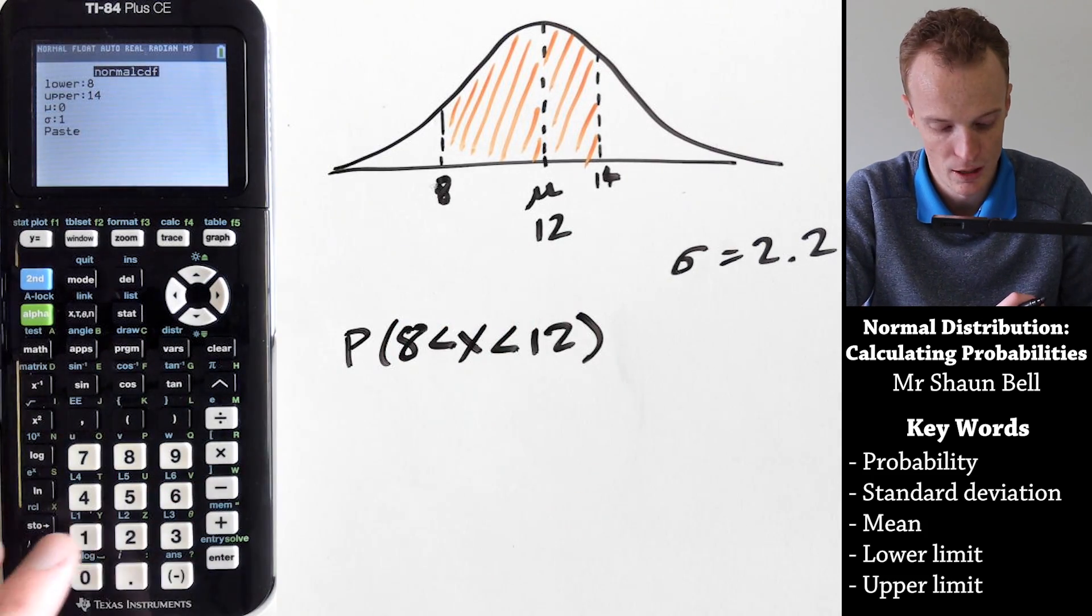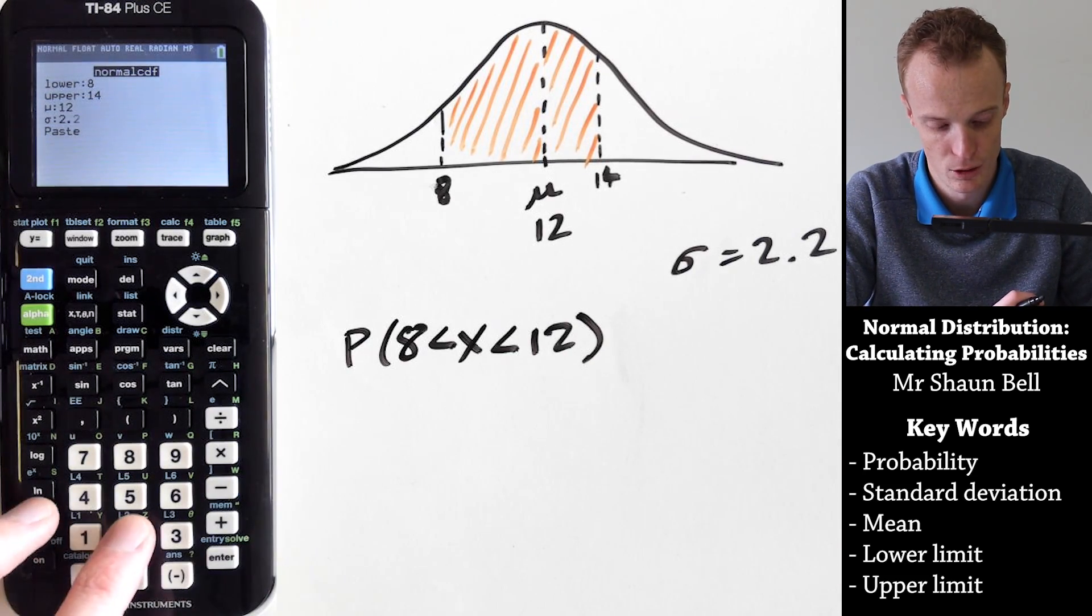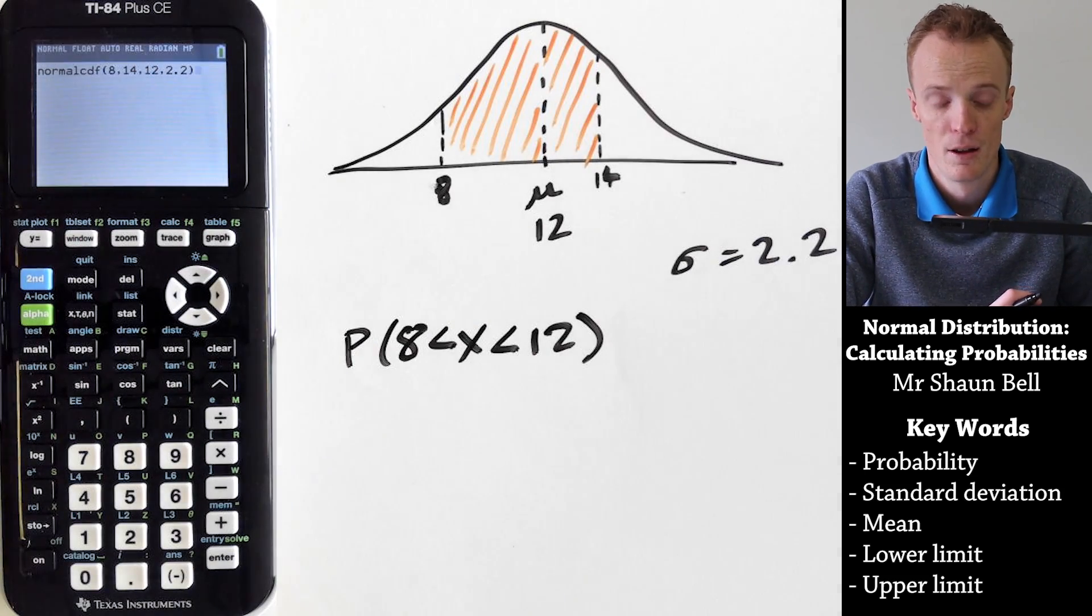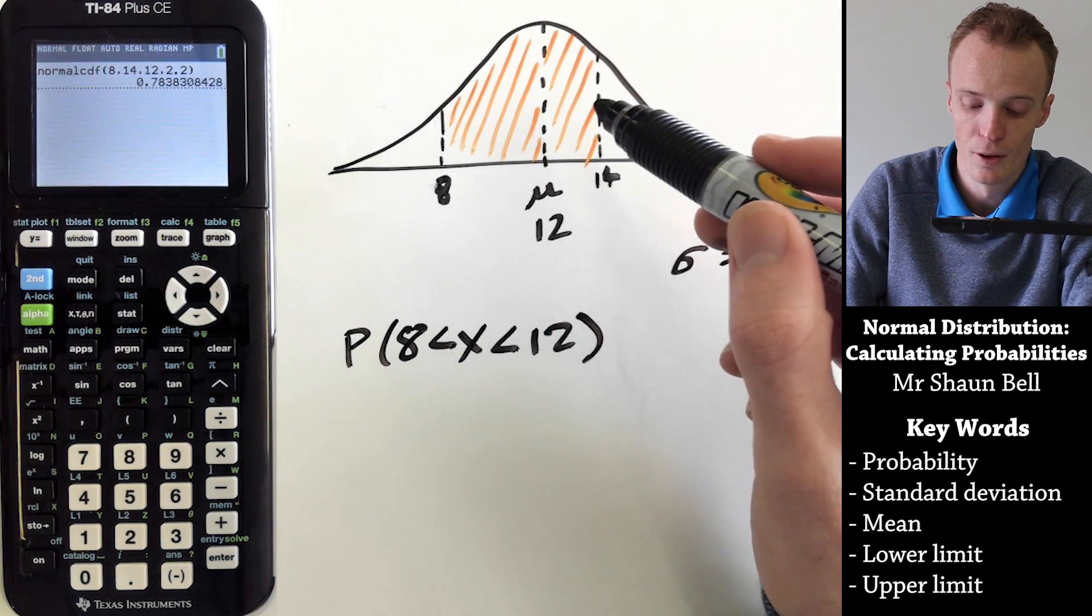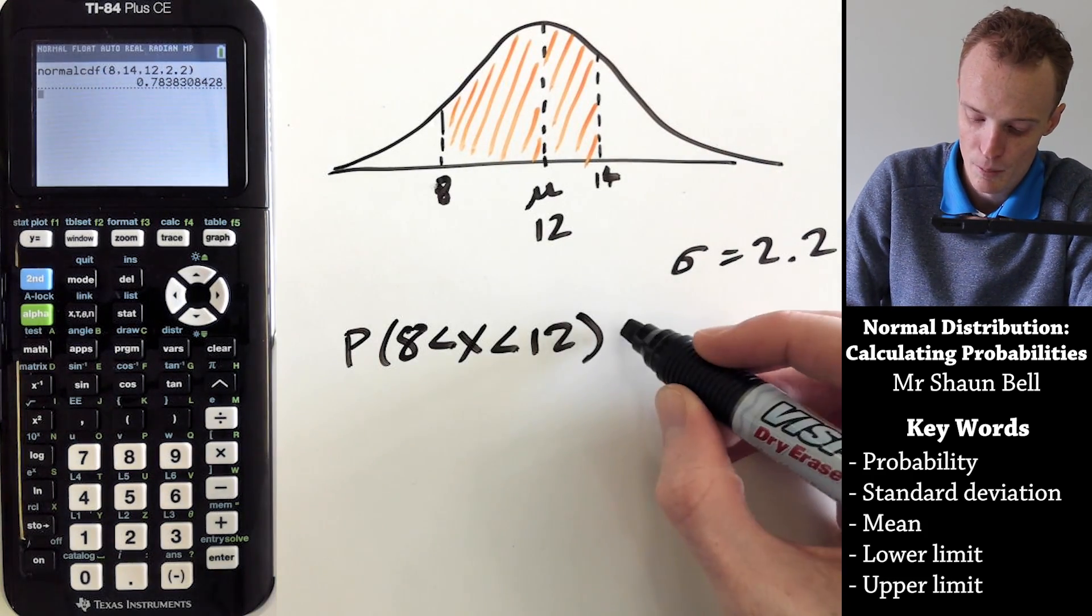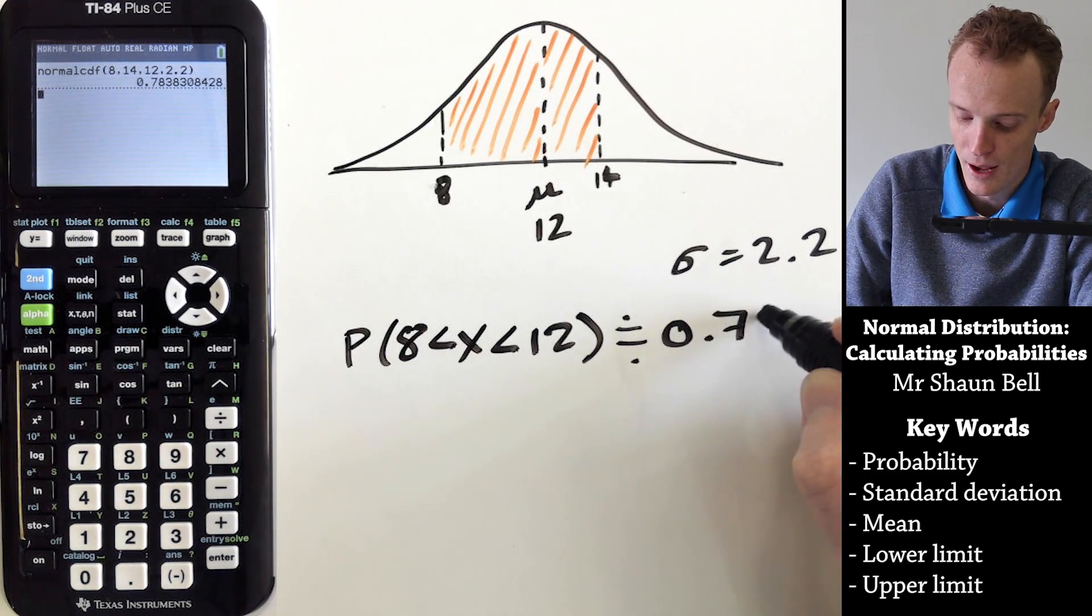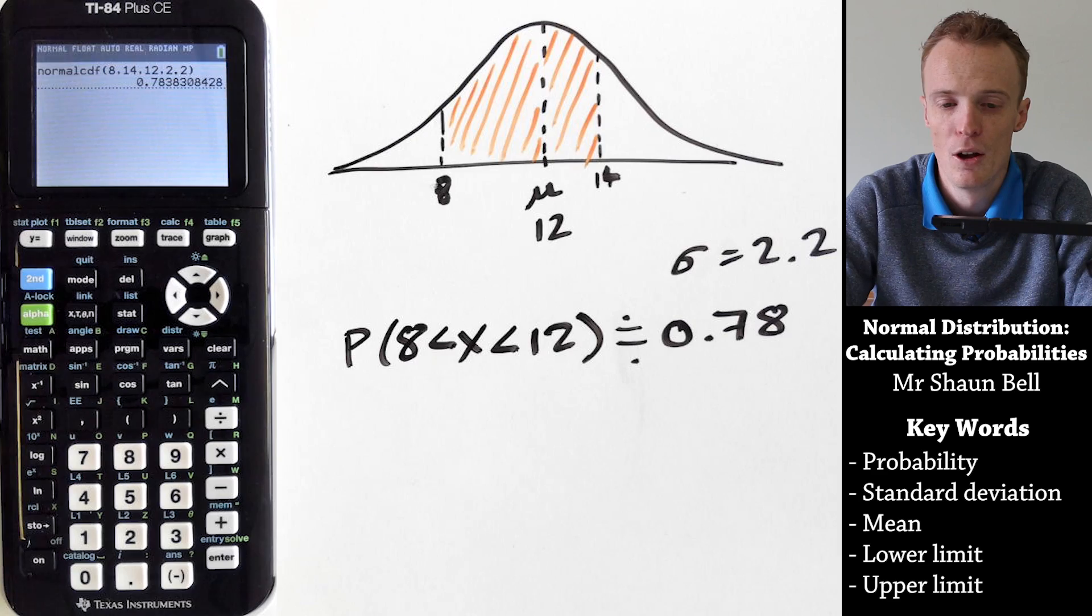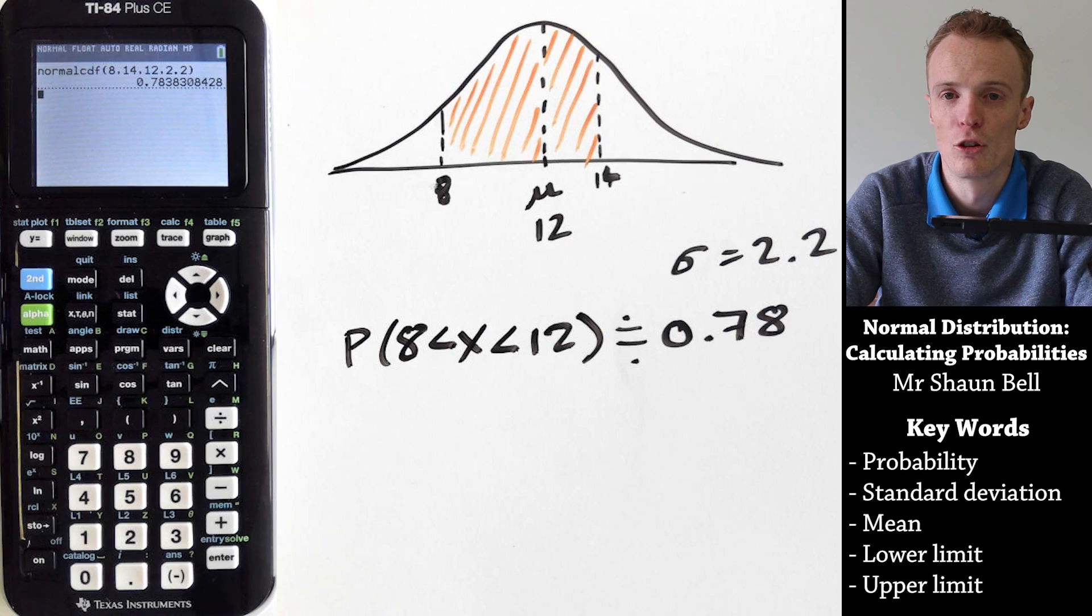Then it'll ask for our mean, which here is 12, and our standard deviation, which here is 2.2, and we hit paste and it'll put it into our run screen. Now we hit enter again and it'll give us the probability of it falling between these two values, which is also the area underneath this graph. So our probability is approximately equal to 0.78. What that means is there's approximately a 78 percent chance of each cookie having between 8 and 14 chocolate chips on there.